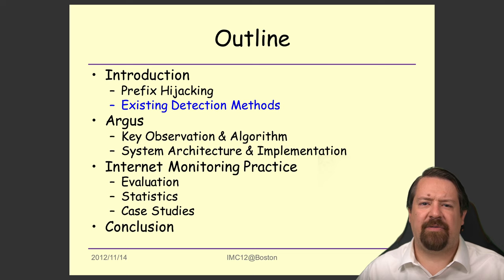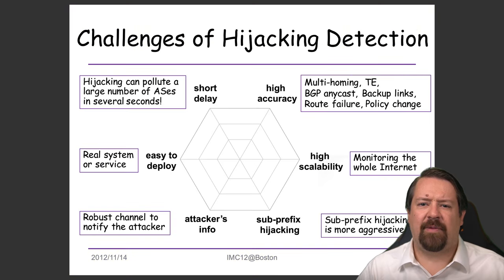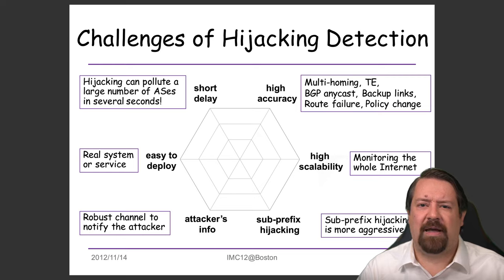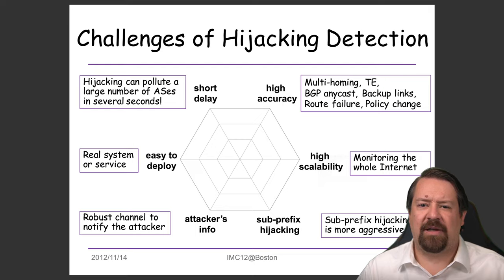So how do we detect prefix hijacking? The fundamental problem is that there's no master database saying what autonomous system is allowed to originate what prefixes. If there were, preventing hijacking would be simple — you simply don't allow an AS to originate a prefix it doesn't own. Best practices indicate every ISP should have a master list of what prefixes its customers own and are allowed to originate, and only accept advertisements for those. However, in practice, many ISPs allow their customers to advertise any prefix.